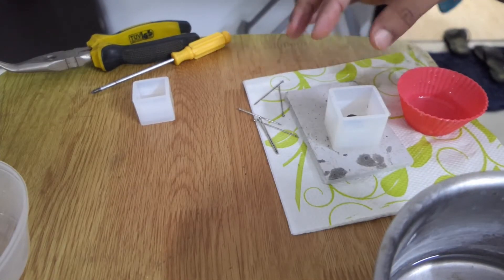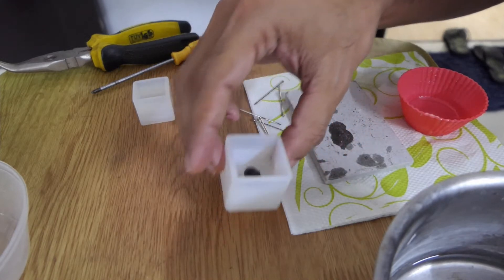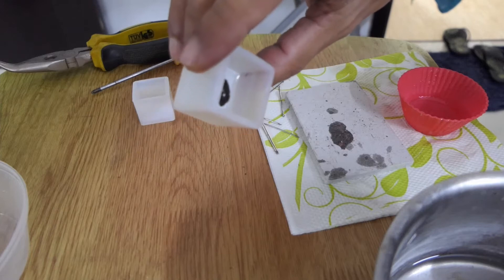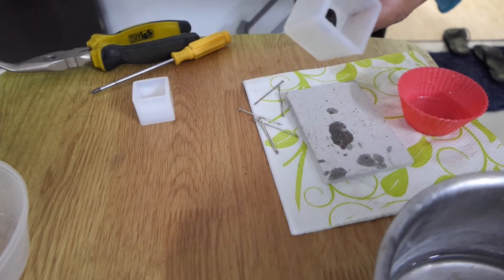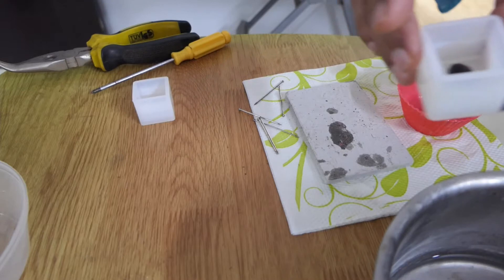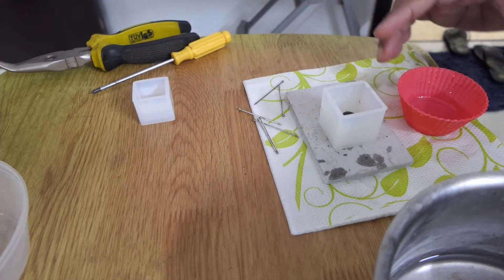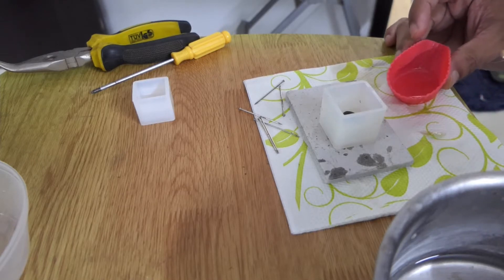After about 10 to 20 minutes, I came back, and you can see it actually worked—the beetle was stuck to the bottom. I was quite happy with the result. It wasn't very firmly stuck, but it was stuck well enough so that I could pour the second layer.